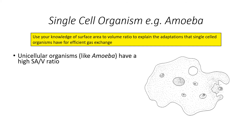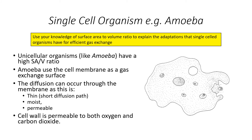In terms of a single cell amoeba, we can talk about the surface area to volume ratio — they have a high surface area to volume ratio, which means substances will move through them quickly. It has a cell membrane — the phospholipid bilayer — as a gas exchange surface, so it has the thinnest possible exchange surface and distance for substances to travel across. We also have a permeable cell wall so gases can move freely through it. Quite often there is also some level of moisture, which will help increase the rate of diffusion.